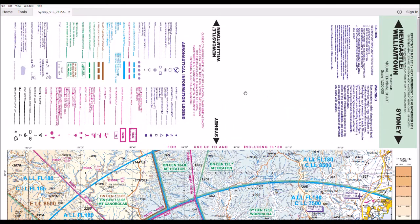You can download charts from Air Services Australia. If you do a search on Air Services and AIP — that's the Aeronautical Information Publication — you'll come to the Air Services site where you can download various charts.